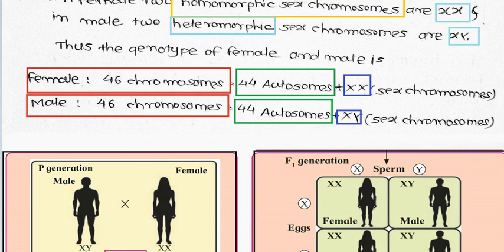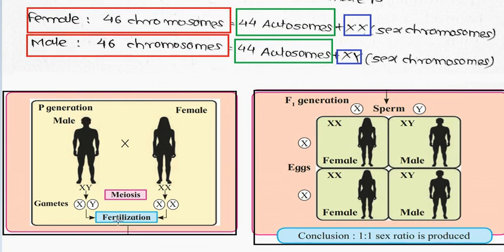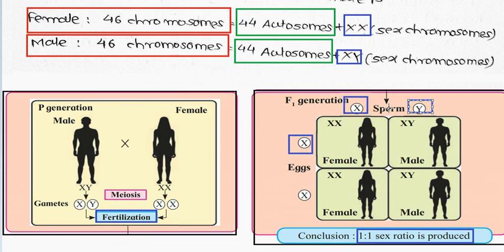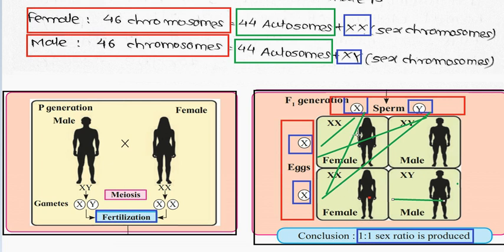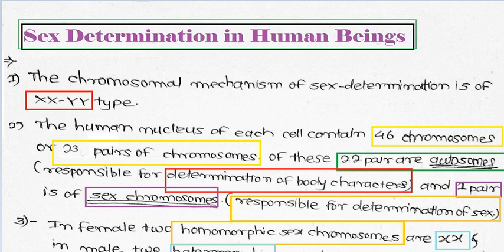During fertilization, the two gametes fuse. Looking at a cross, the possibilities show a 1:1 ratio is produced. The X gamete combines with X giving XX (female), and X combines with Y giving XY (male). So the egg is XX and the sperm carries either X or Y. X combined with X gives XX (female); X combined with Y gives XY (male). Therefore the female-to-male ratio is 1:1. This is about sex determination in human beings.